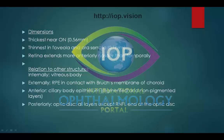Its relations to other structures: internally it's related to the vitreous body. Externally, the RPE is in contact with Bruch's membrane. Anteriorly it is continuous with the ciliary body epithelium, both pigmented and non-pigmented. Posteriorly it is related to the optic nerve, and all layers except for the retinal nerve fibre layer end at the optic disc.